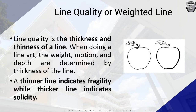Line quality refers to the thickness and thinness of a line. A weighted line is more on the heavier side, while line quality presents the totality of your character or object. When doing line art, the weight, motion, and depth are determined by the thickness of a line. A thinner line indicates fragility while a thicker line indicates solidity. Thick lines feel heavier than thinner lines. Thin lines give a sense of movement while thick lines give the opposite.